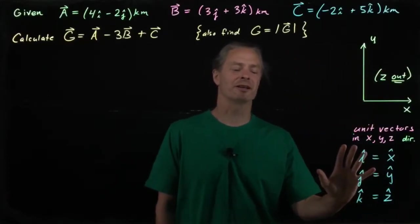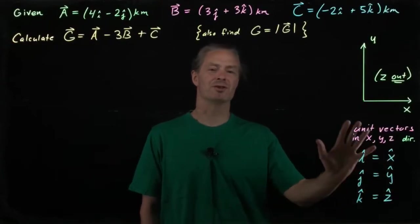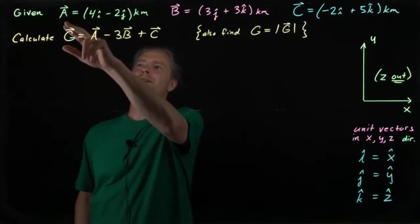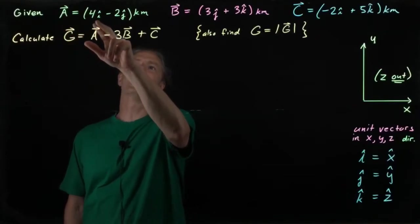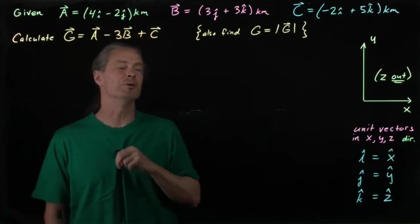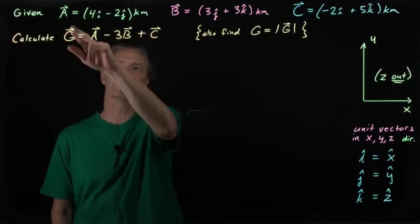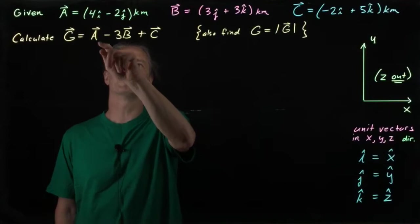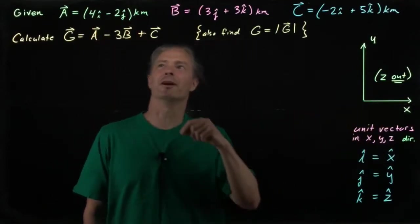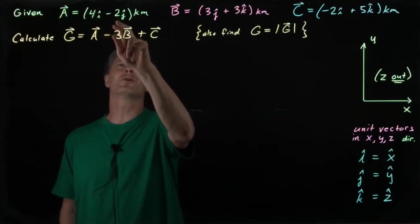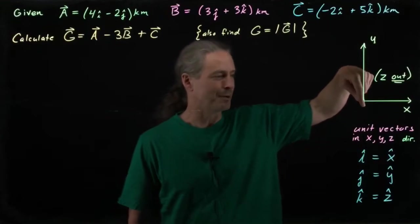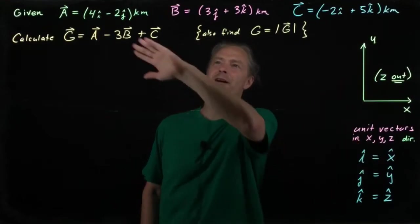We can build any three-dimensional vector out of combinations of these. And so three such vectors are here. Vector A is 4i-hat minus 2j-hat kilometers. I can distribute the kilometers through. So, for example, what A vector is is a vector of amount 4 kilometers in the positive x direction and negative 2 kilometers in the y direction, or that is 2 kilometers in the negative y direction. Those are the parts of this.